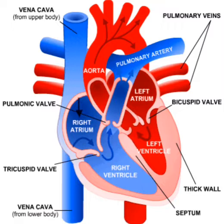If we see a cross section of a human heart, we will see that the human heart is basically a four-chambered organ. As you can see in the picture, there is the right atrium and the left atrium — the two upper chambers are called the atrium. The two lower chambers are called the ventricle: the right ventricle and the left ventricle.